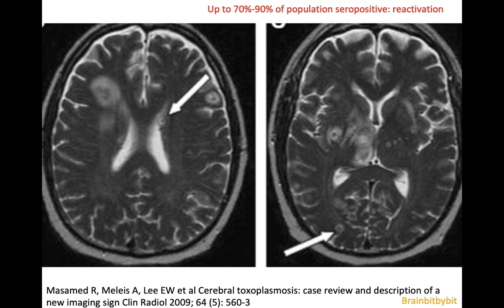Once immunocompromised, this parasite becomes reactivated, leading to multiple target lesions in the brain at the corticomedullary junction, the basal ganglia, and the thalamus.